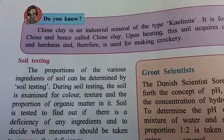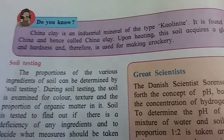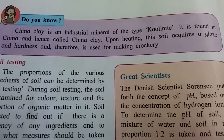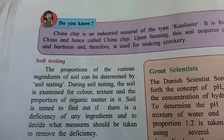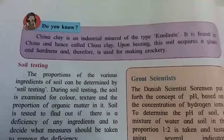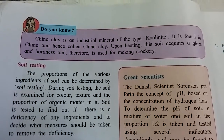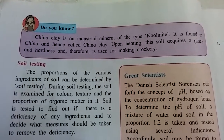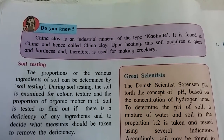Do you know? China clay is an industrial mineral. It is found in China, and hence is called china clay. Upon heating, this soil acquires a glass-like quality and hardness, and therefore it is used for making crockery.